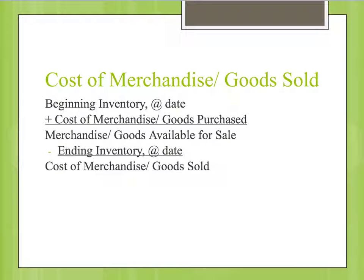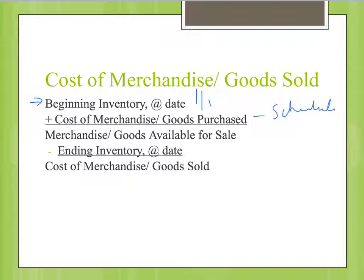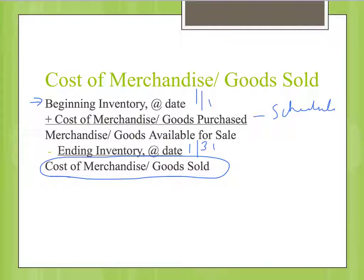Here's an illustration of a cost of merchandise sold schedule within the income statement. We begin with beginning inventory at the start of the period — perhaps January 1st. Then we add our cost of goods purchased. Beginning inventory plus goods purchased gives us our merchandise available for sale. Then we take an ending inventory — perhaps January 31st. Subtracting ending inventory from goods available for sale gives us our cost of merchandise sold — those items are what we sold.